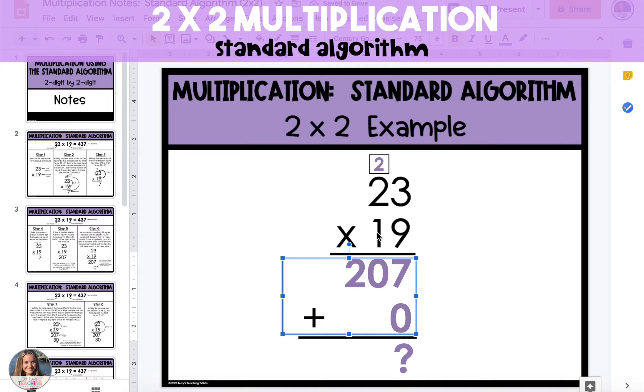Now we can multiply our 1 ten in 19 by the first factor. We start by multiplying the 1 ten by 3, which is 3. So we put our answer of 3 into the tens place of our second product. Because we don't have anything to regroup, we can move on to our second digit.